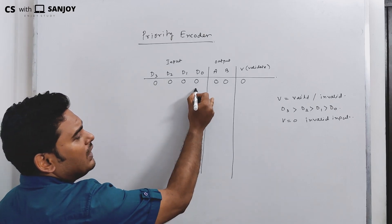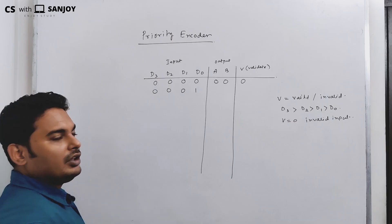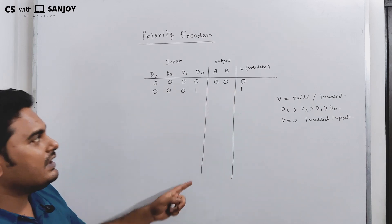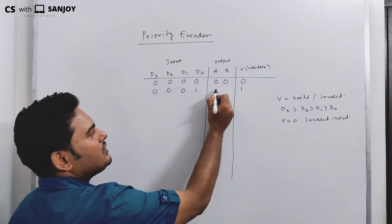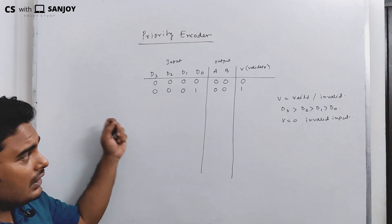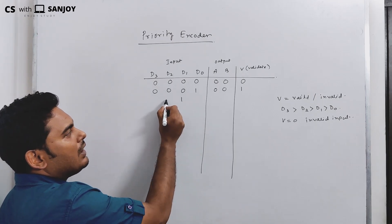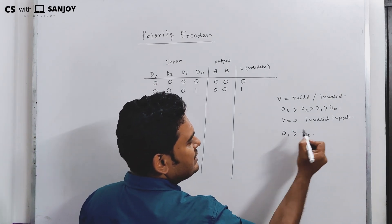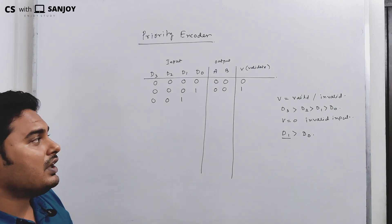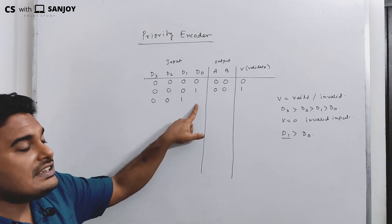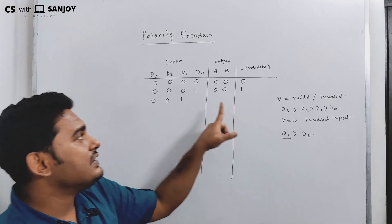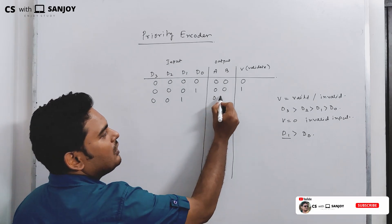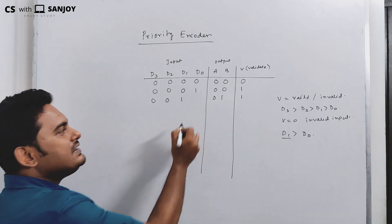Next, if D0 is set to 1 and the rest are 0 — this is a valid input, so V equals 1, and output is 0, 0. Now if D1 is set to 1: since D1 has higher priority than D0, D0 becomes irrelevant — it is a don't care. If D1 is 1, the output is 0, 1 and it is a valid input.